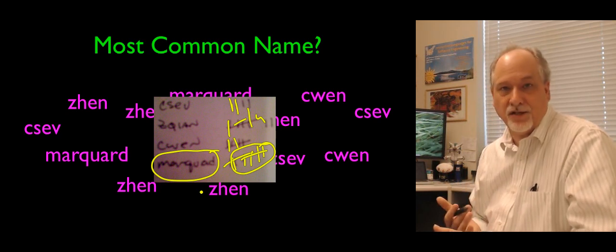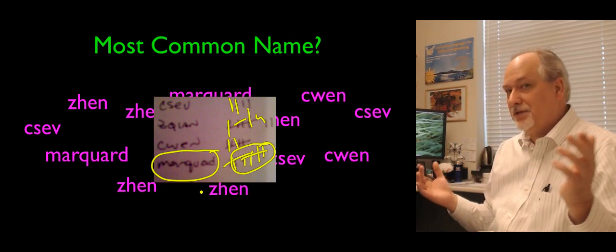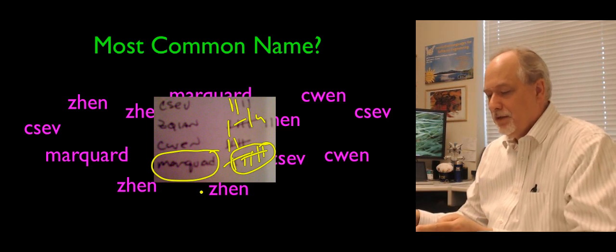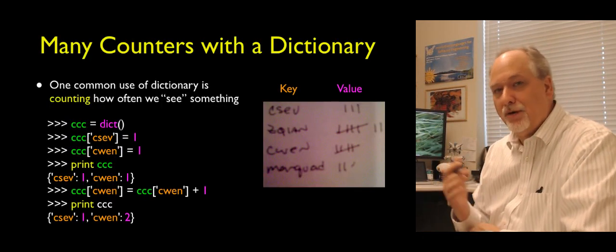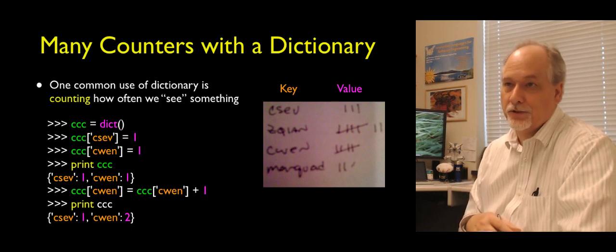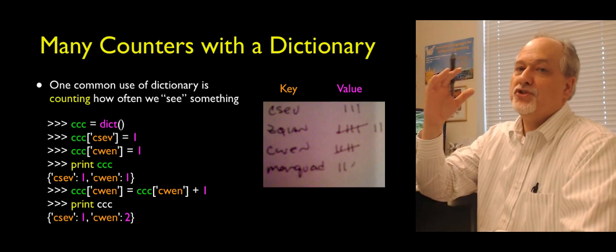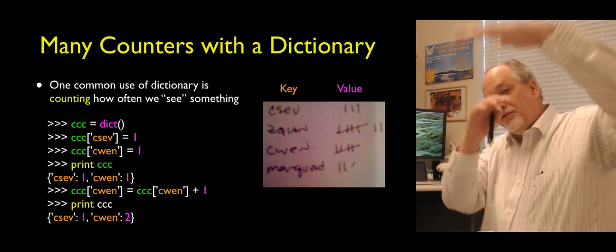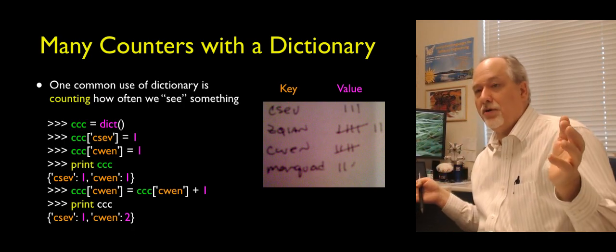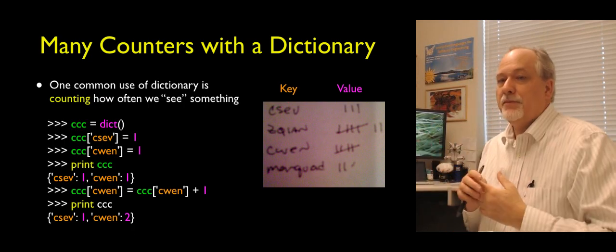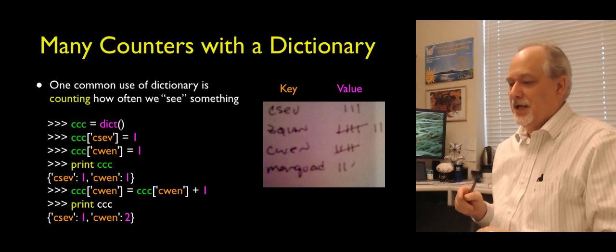You can think of this as a histogram — a bunch of counters indexed by a string. This is a pattern of many simultaneous counters with a dictionary. We're looking at a series of things and simultaneously keeping track of a large number of counters, rather than just one counter. 'How many names did you see total?' is one counter. 'How many of each name?' is a bunch of simultaneous counters.